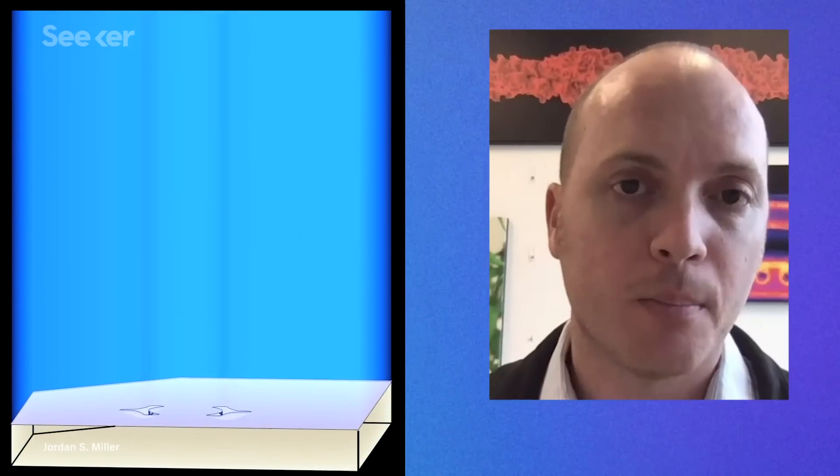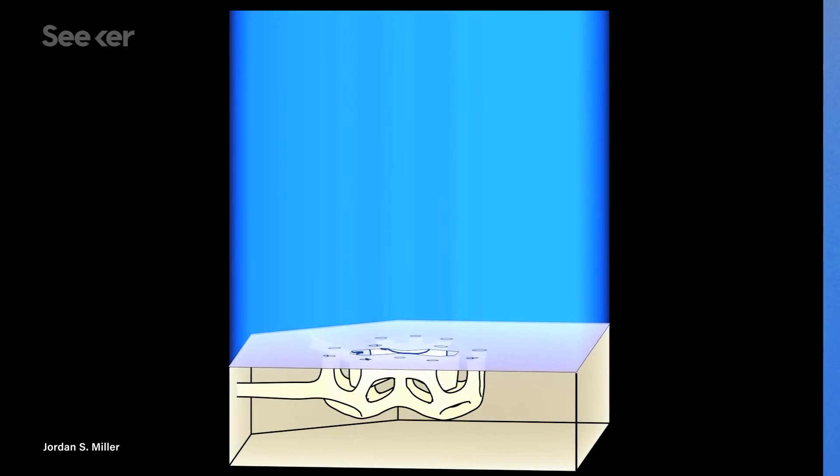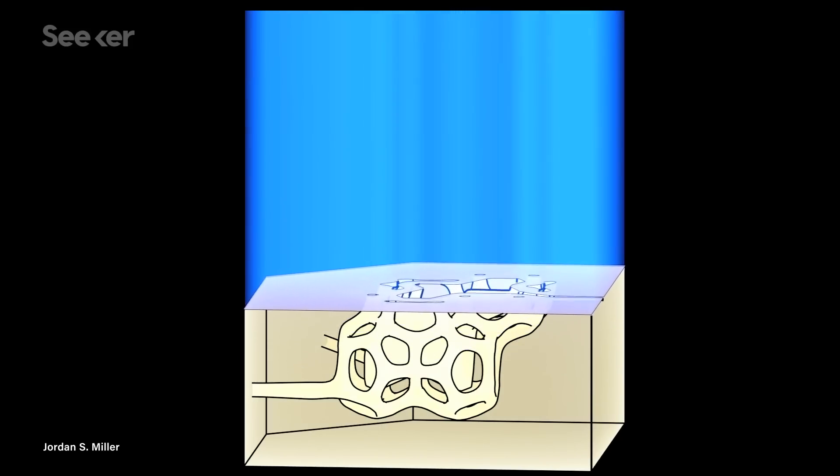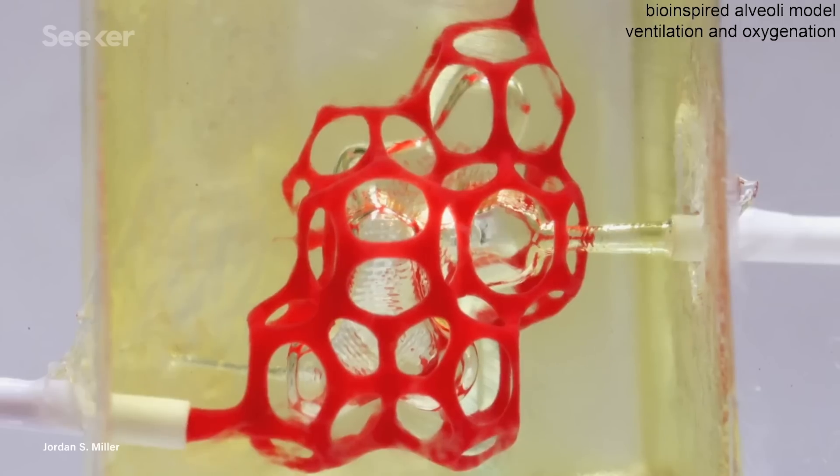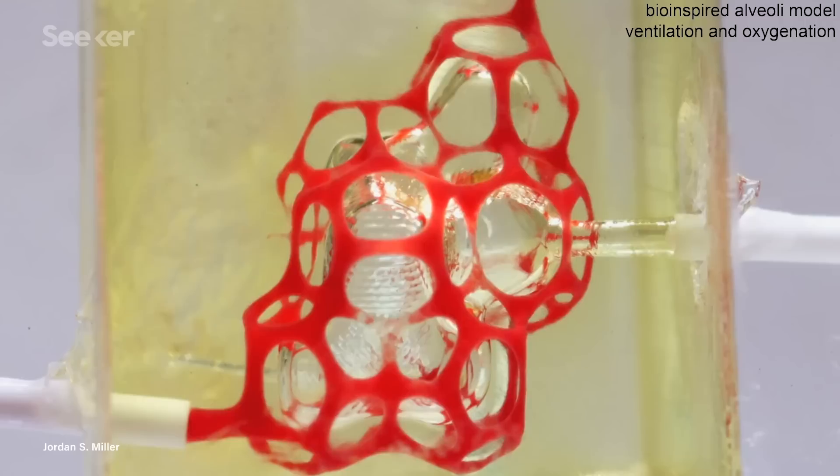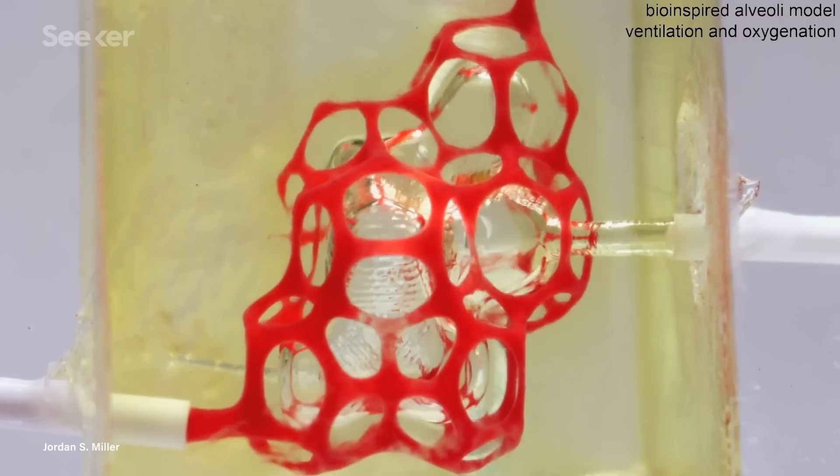This is a light-based polymerization system. So we have a light-sensitive liquid that when you shine the right color of light at the right intensity of energy, the right number of photons hit that sample, you can convert that liquid into a solid only in that region.